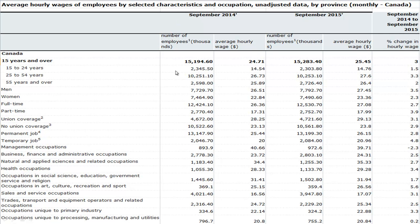This is some data I got from Statistics Canada. It has to do with average hourly wages of employees in a whole bunch of different categories for September 2014 and September 2015, for Canada. The "15 years and older" row breaks down different age categories together. So if I added the 15 to 24, the 25 to 54, and the 55 and over, I would get the 15,194 — which is actually in thousands, meaning 15,194,600 people.